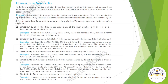Now our next concept is Divisibility of Numbers. To find out whether a number is divisible by another number, we divide it by the second number. Divisibility by 2: if the digit in the unit place of the given number is 0, 2, 4, 6, or 8 — meaning at the last place if there is 0, 2, 4, 6, or 8 — the number is divisible by 2.